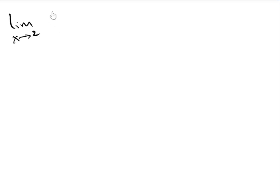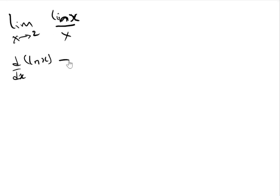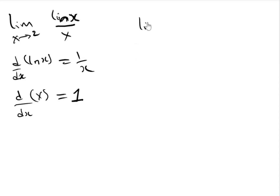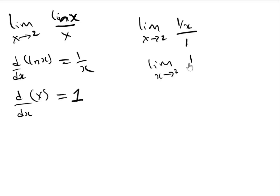If we have the limit as x tends to 2 of ln(x) divided by x, using L'Hôpital's rule, we differentiate both the numerator and denominator. The differentiation of ln(x) gives 1/x, and the differentiation of x gives 1. Therefore, we have the limit as x tends to 2 of (1/x) ÷ 1, which equals 1/2. That is our limit.